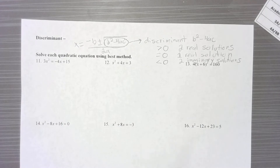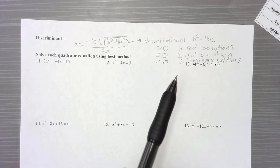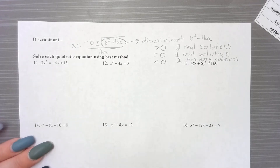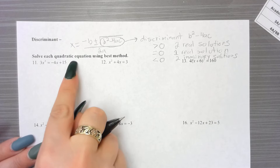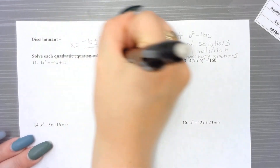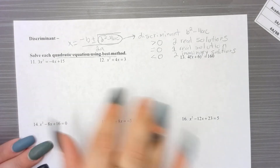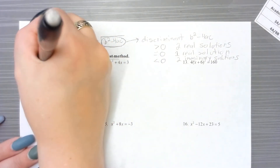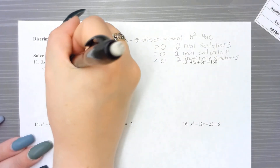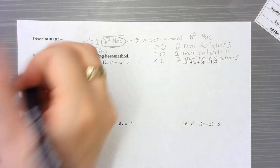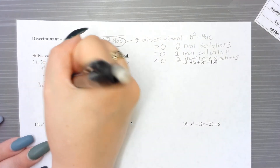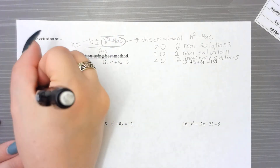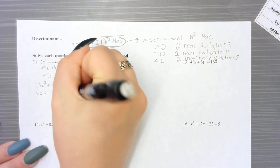This helps us because it can tell us how many answers we should be getting without solving the entire problem, saving time. For the discriminant problems, the directions should say 'use the discriminant.' We need to set equal to 0 first — add 4x to both sides and subtract 15 — to get 3x squared plus 4x minus 15 equals 0. Then we identify A which is 3, B which is 4, and C which is negative 15.